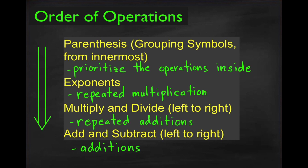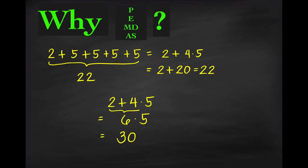Let me give you examples that will convince you that PEMDAS really makes sense. We have 2 plus 5 plus 5 plus 5 plus 5 plus 5. Multiplication is repeated addition, so the sum is 20 plus 2, equal to 22. We can write this as 2 plus 4 times 5. Applying PEMDAS, we perform multiplication first: 4 times 5 equals 20, then 2 plus 20 equals 22, which is correct.